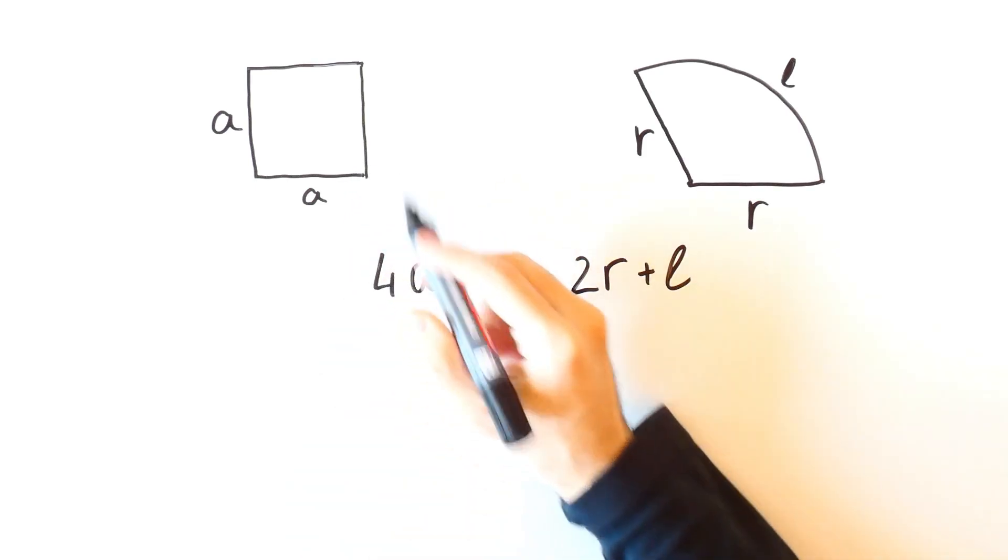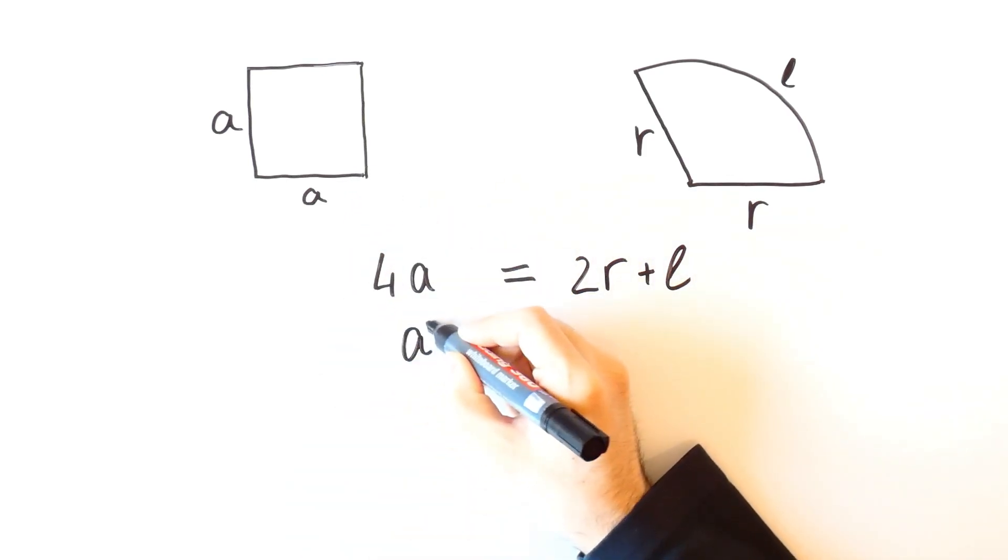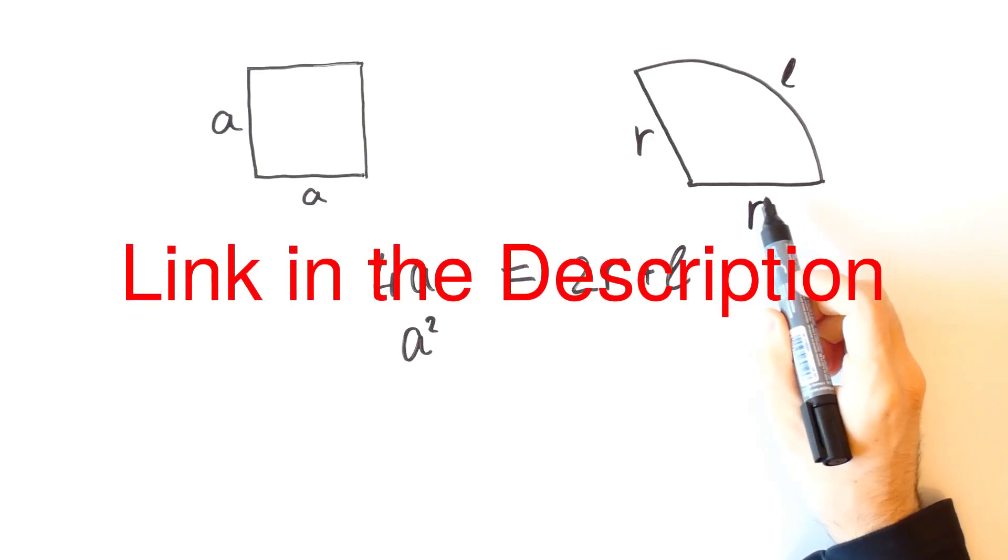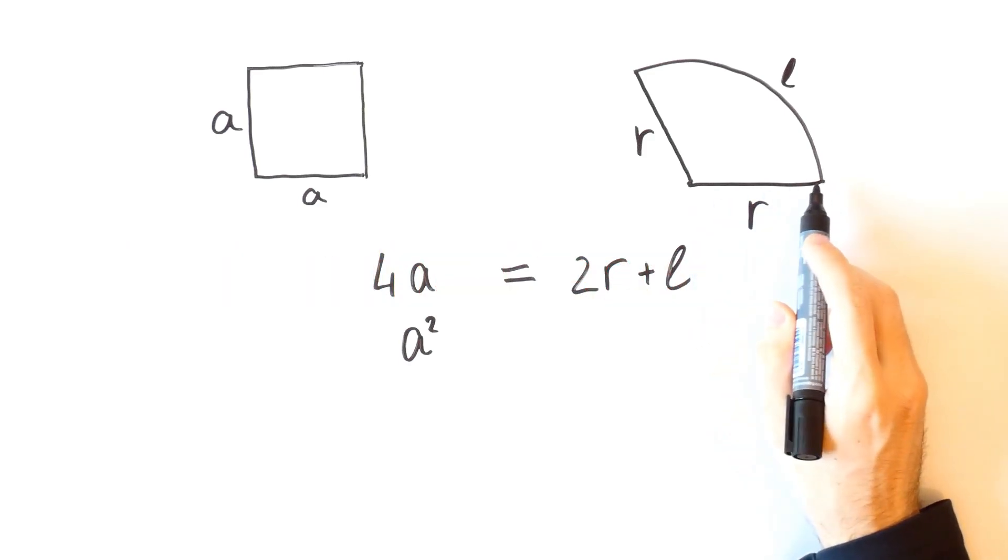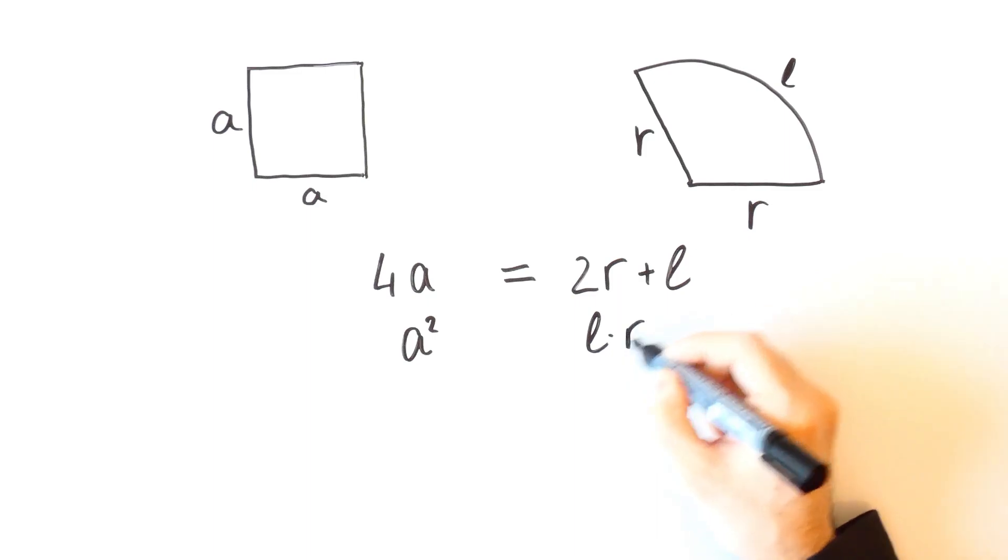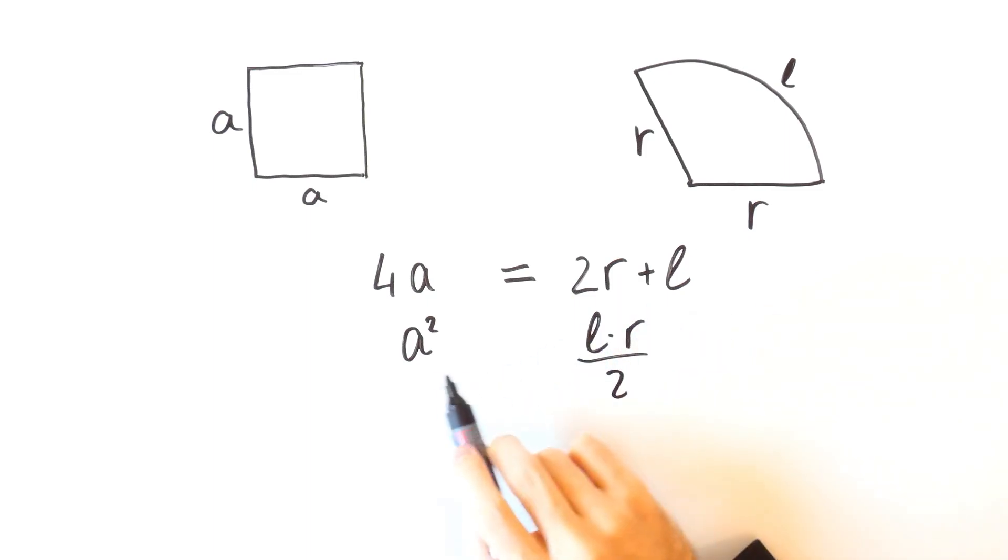The area of the square is equal to A squared and in the previous video we showed that the area of a sector is equal to L times R over 2. Since the areas are equal, then A squared is equal to L times R over 2.